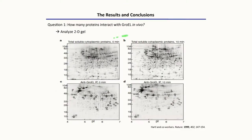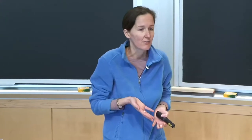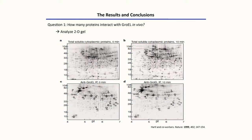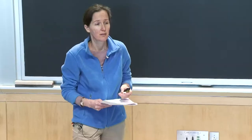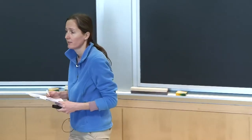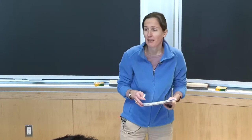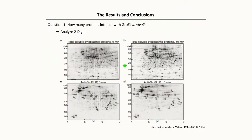So we're going to focus on looking at these gels. What we need to ask is: what do we learn just from qualitative inspection of these data? On these, along the y-axis we have molecular weight, and along the x-axis the PI. If we first take a look at the total soluble cytoplasmic proteins at 0 minutes and 10 minutes, what do we see? Do we see many spots or a few spots?